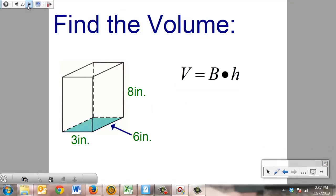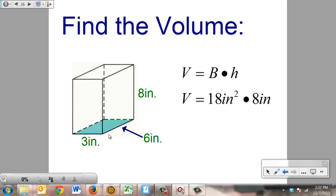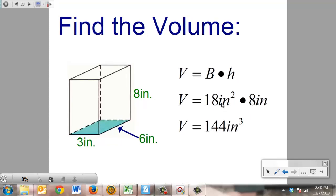Now that we have that information, the understanding of how those work, we can come back over here and find the volume. The volume we know is equal to the base area times the height. Our base area in this problem we already found was 18 inches squared. We got that by doing the 3 inches times the 6 inches. Our height in this problem is the 8 inches. So volume equals 18 inches squared times 8 inches. 18 times 8 is 144. Inch squared times inch is inches cubed. So my volume is 144 inches cubed.